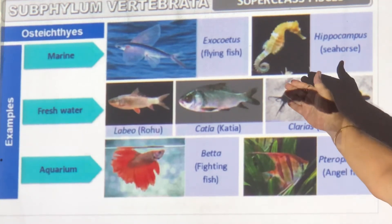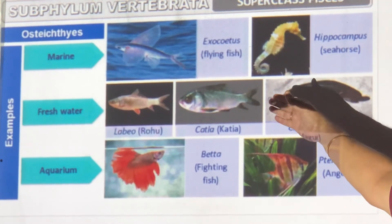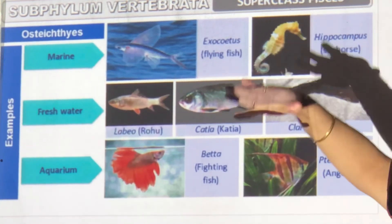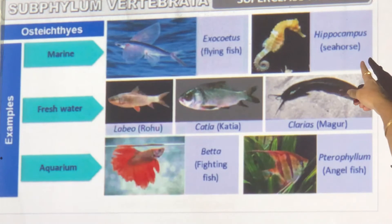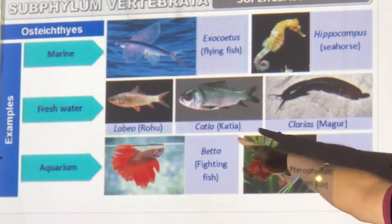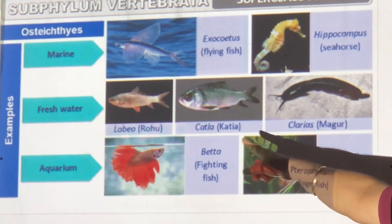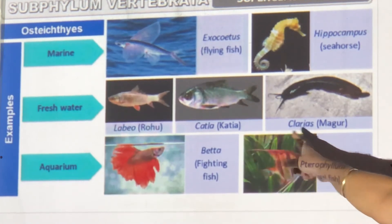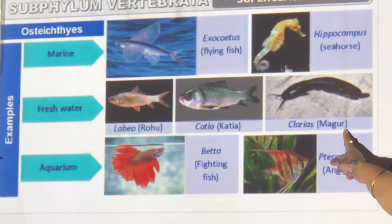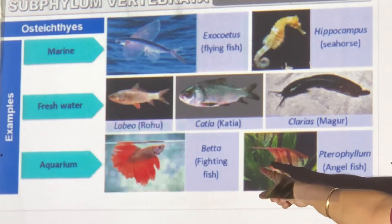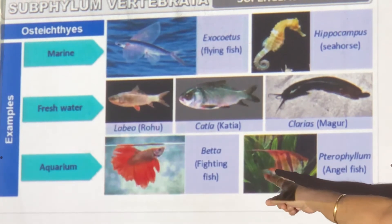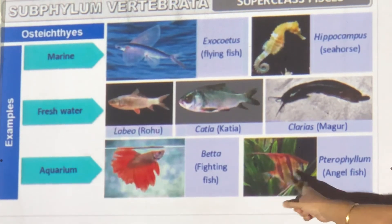Examples of Osteichthyes: Exocoetus (flying fish), Hippocampus (seahorse), Rohu, Catla, Mystus, aquarium fish like the fighting fish, swordfish, and angelfish.